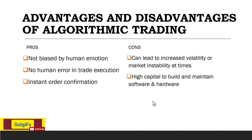Another con is the high capital needed to build and maintain the software. For big institutions, a lot of money is needed to maintain their software, as they use large computers and high-frequency trading systems. For individual traders, you need to pay a developer to create the algo for you — you send your trading strategy to the programmer for them to code the bot the way you want to trade, and that requires capital.